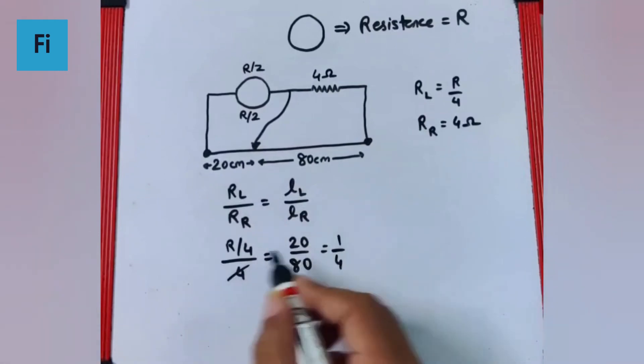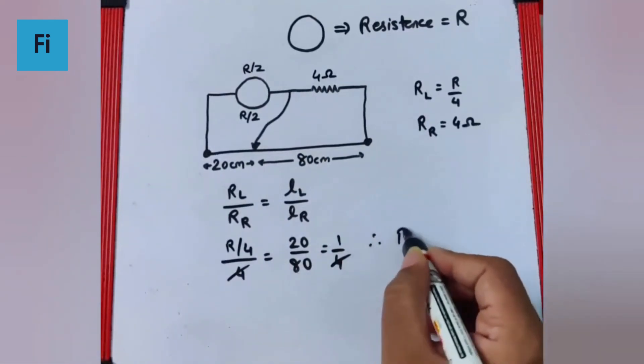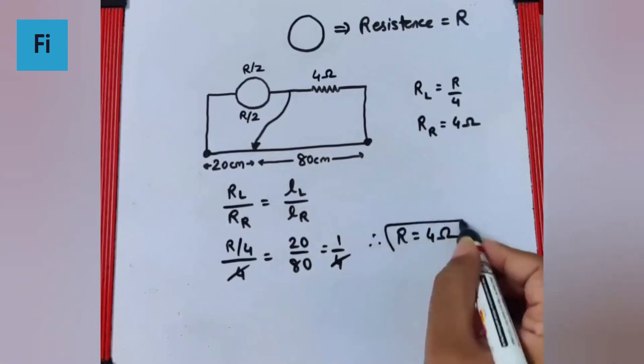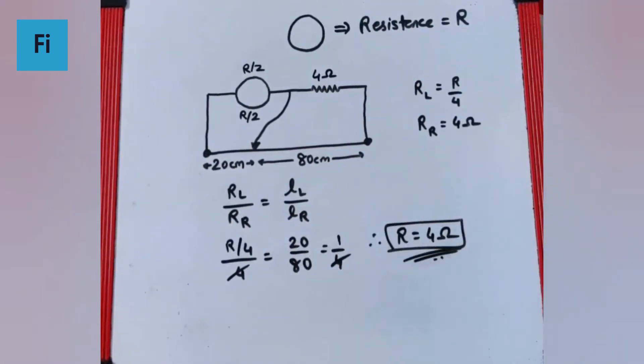So obviously this 4 gets cancelled and we get the resistance of the bangle as 4 ohm as our final answer.